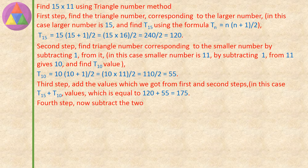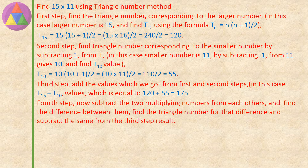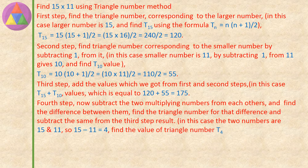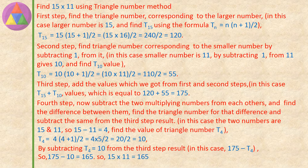Fourth step: subtract the two multiplying numbers from each other and find the difference between them, then find the triangle number for that difference and subtract it from the third step result. In this case the two numbers are 15 and 11, so 15 minus 11 equals 4. Find T4: T4 equals 4 into (4 plus 1), divided by 2, equals 4 into 5, divided by 2, equals 20 divided by 2, equals 10. So T4 equals 10. Subtracting T4 (which is 10) from the third step result 175: 175 minus 10 equals 165. So 15 into 11 equals 165, obtained using triangular number multiplication.